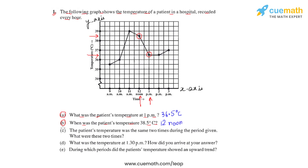In question c, we are told the patient's temperature was the same at two times during the given period. Observing the graph, we see that at 1 pm and at 2 pm the temperature of the patient was the same. Reading the y-axis, both times the temperature was 36.5 degrees Celsius. So the two times when the temperature was the same are 1 pm and 2 pm.